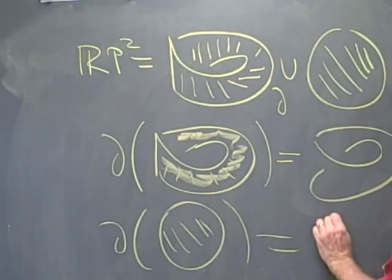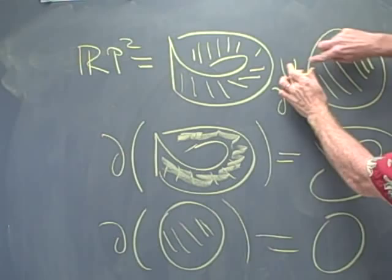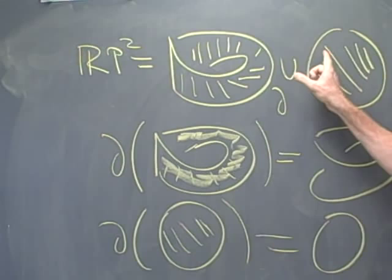And it's fairly easy to see that if we wanted to glue these together in three-dimensional space, just taping these edges together, we'd have a problem because this disc would have to pass through this Mobius band.